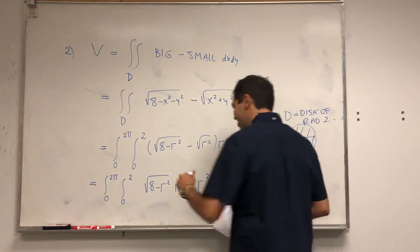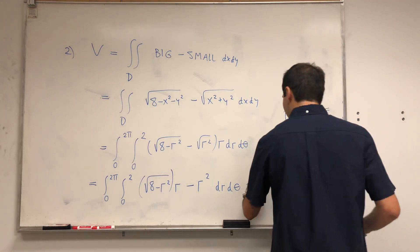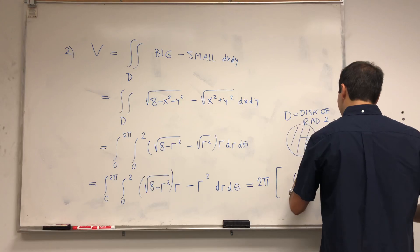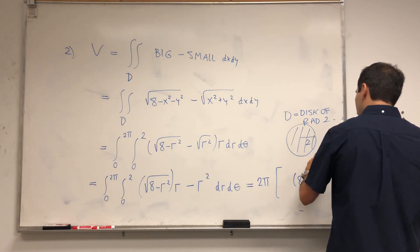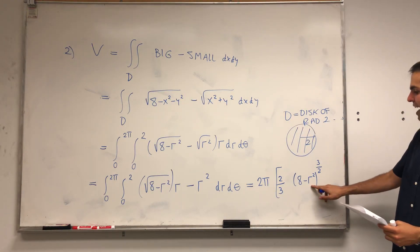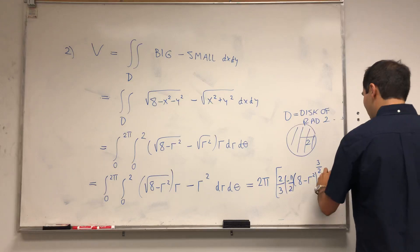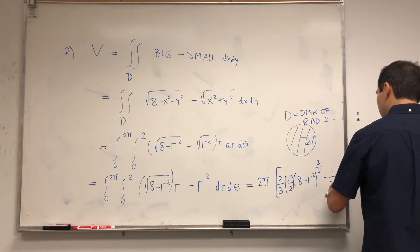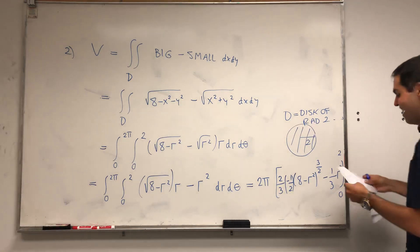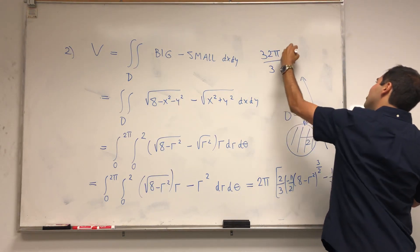The integrand doesn't depend on θ at all, so we multiply by 2π. For the r integral: 8 minus r squared to the one-half integrates to 8 minus r squared to the three-halves, multiplied by two-thirds; differentiating the inner term gives a factor of minus two, which we cancel with minus one-half. The other term gives minus one-third r cubed. Evaluating from 0 to 2 gives the result.